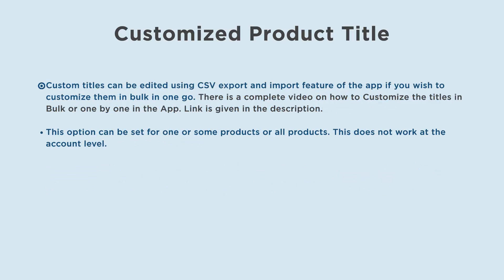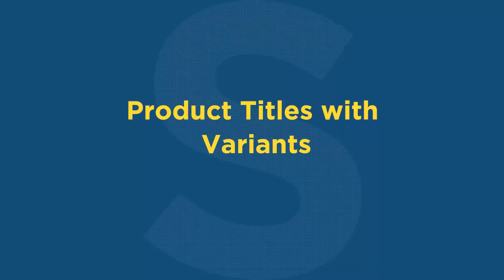Custom titles can be edited using the CSV export and import feature of the app if you wish to customize them in bulk in one go. There is a complete video on how to customize titles in bulk or one by one in the app — the link is given in the description. This option can be set for one, some, or all products and does not work at the account level.